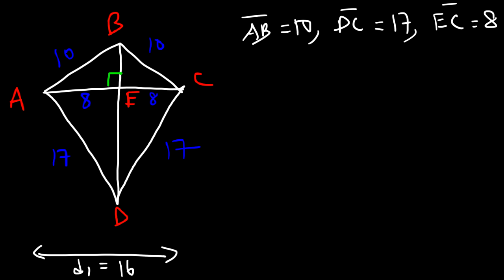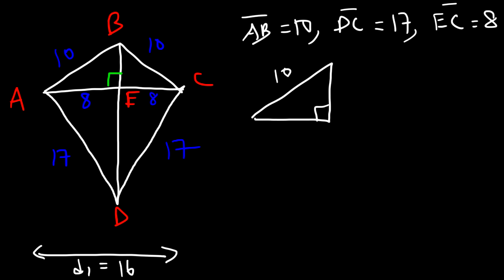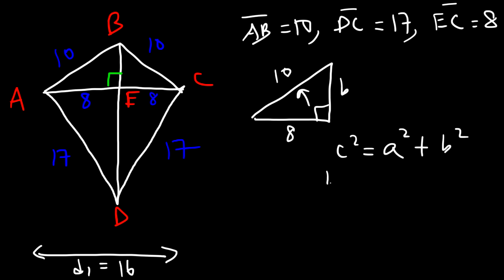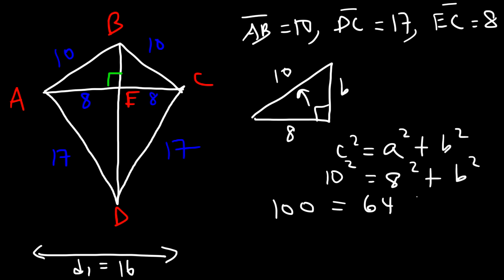Diagonal AC, which we call D1, is 8 plus 8, or 16 units. Now we need to calculate BE and ED. Focusing on the right triangle containing BE, the hypotenuse is 10 and one leg is 8. Using the Pythagorean theorem: 10 squared is 100, 8 squared is 64, and 100 minus 64 is 36. Taking the square root of 36 gives us 6, so BE is 6 units long.